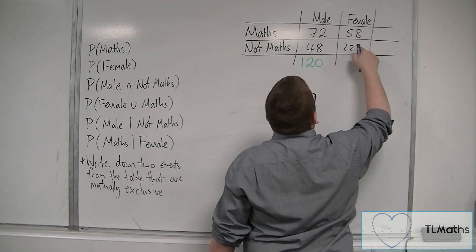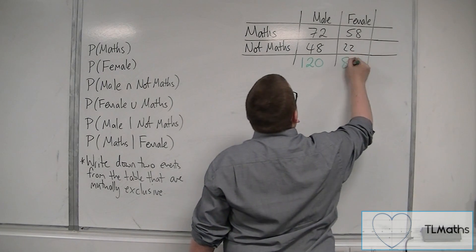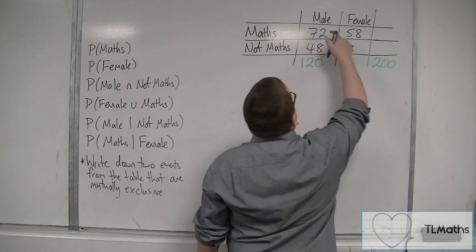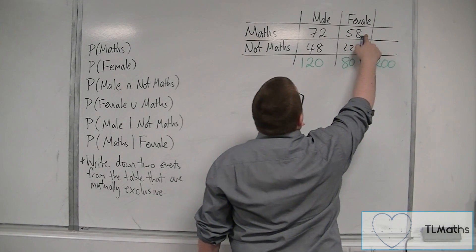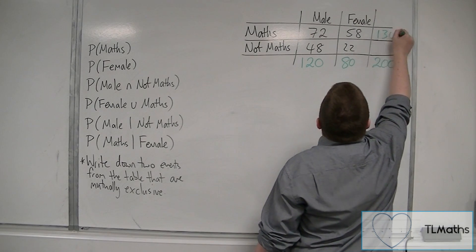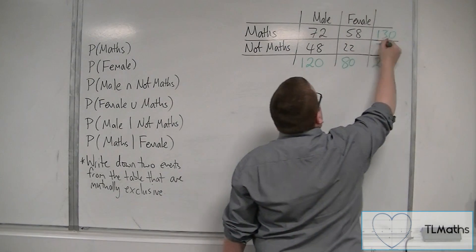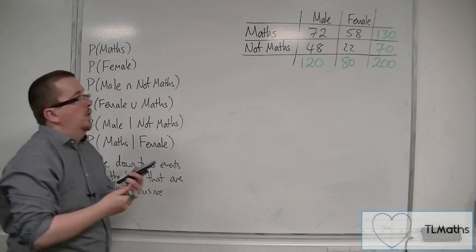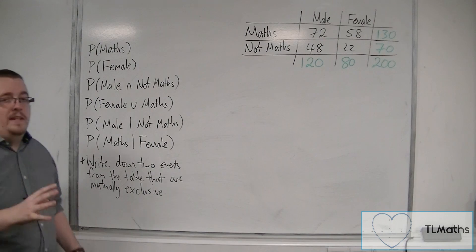We've got 58 and 22, so that's going to get me 80. So 120 plus 80 will get me 200. Now 72 plus 58 will get me 130. And 48 and 22 will be 70. And 130 plus 70 makes the 200. So that's what I really need there.